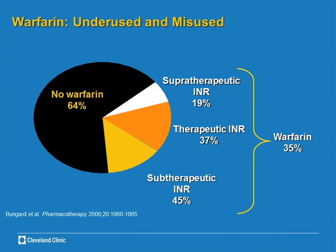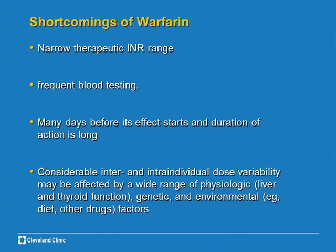The shortcomings of warfarin include a very narrow therapeutic window — we aim between 2 to 3, because higher than 3 or 3.5 causes intracerebral bleeding, and lower than 2 provides little benefit. Patients also need frequent blood checks. The last problem is significant inter- and intra-individual dose variability depending on what an individual eats or what other drugs they take, all of which can interact with Coumadin and either increase or decrease the INR.